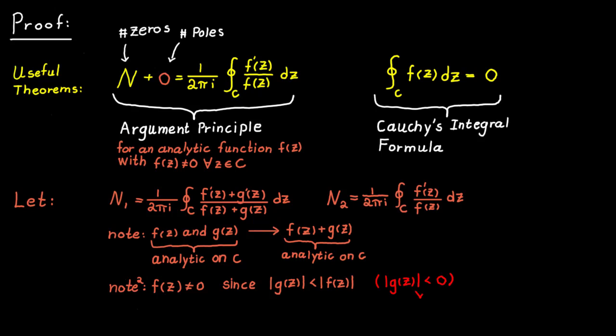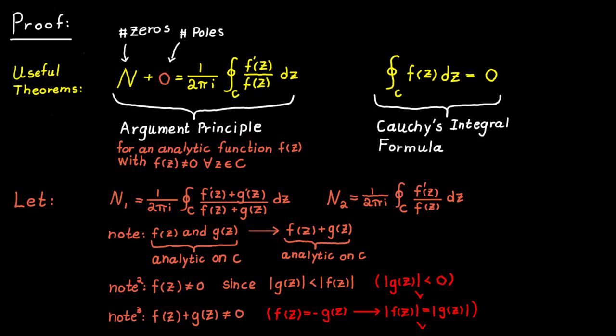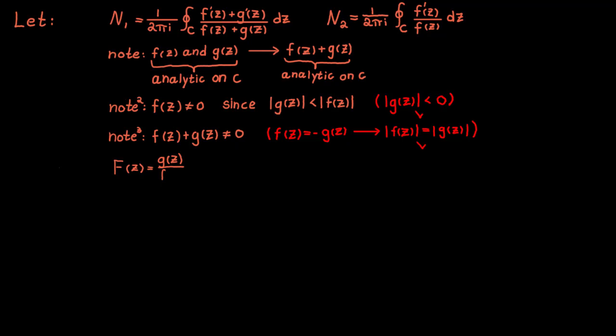With this, we can also say that f plus g cannot be equal to zero on the curve, because that would only be true if f equaled minus g — meaning the absolute value of f would equal the absolute value of g — which cannot be true. It is therefore valid to use the argument principle theorem here. Let us also define a new function, capital F, equal to g divided by f.